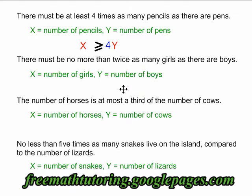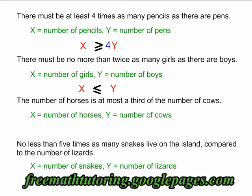There must be no more than twice as many girls as there are boys. The first thing I do is I place an x and a y. No more than indicates a less than or equal to sign. The word 'twice' represents two — it means something is being multiplied by two. Either the x or the y is being multiplied by two.